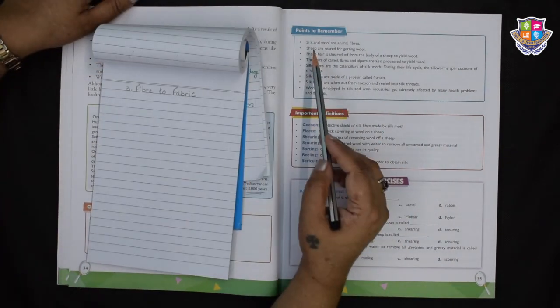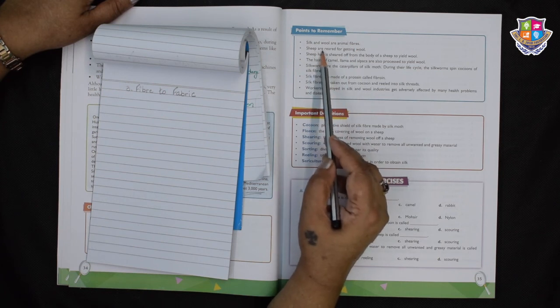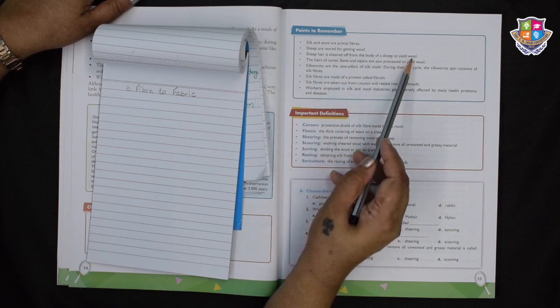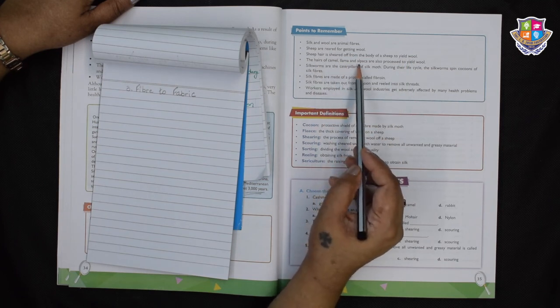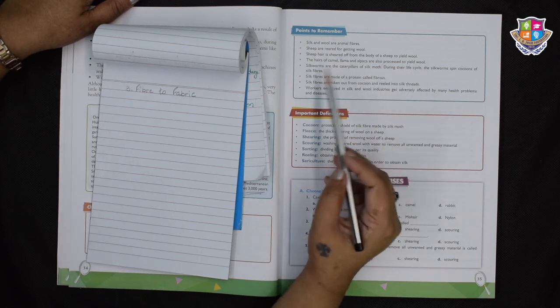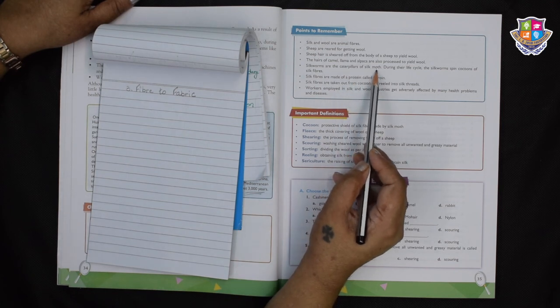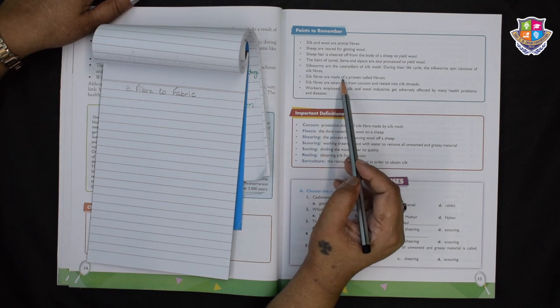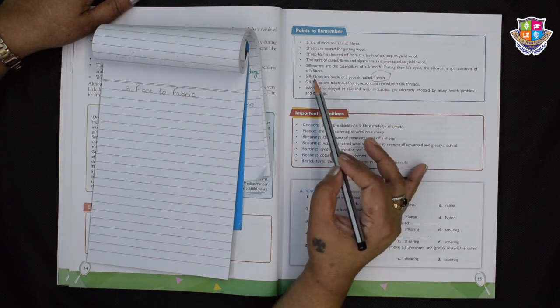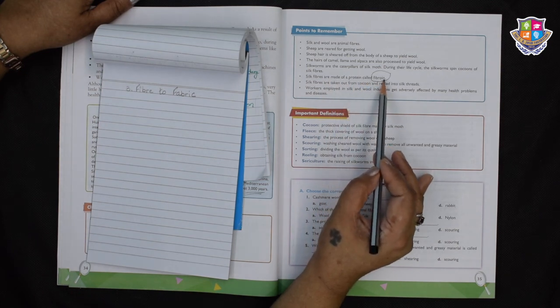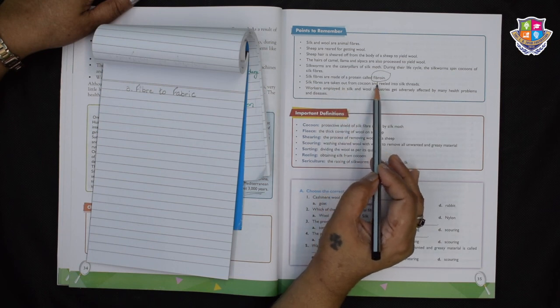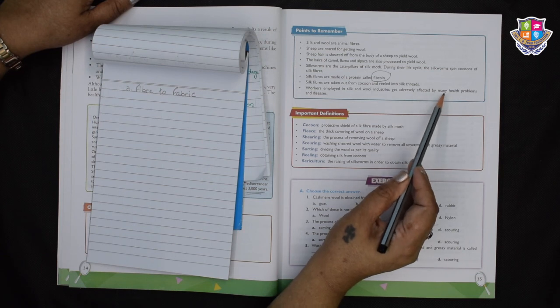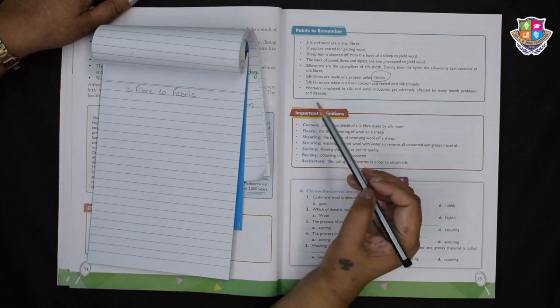Now let's go to the points to remember. Silk and wool are animal fibers. Sheep are reared for getting wool. Sheep hair is sheared off from the body of a sheep to yield wool. The hairs of camel, llama and alpaca are also processed to yield wool. Silkworms are the caterpillars of silk moth. During their life cycle, the silkworms spin cocoons of silk fiber. Silk fibers are made from a protein called fibroin. Silk fibers are taken out of the cocoon and reeled into silk threads. Workers employed in silk and wool industries get adversely affected by many health problems and diseases.